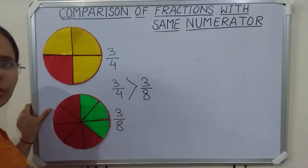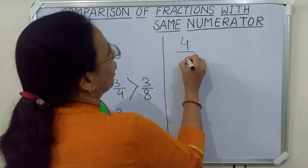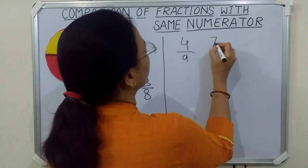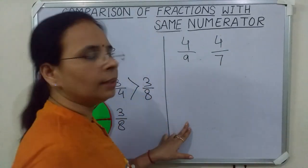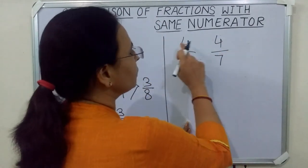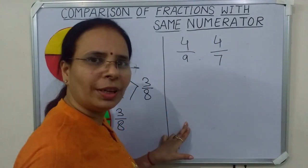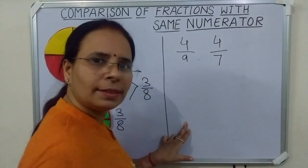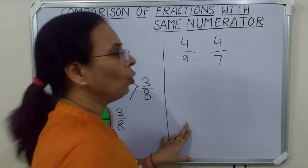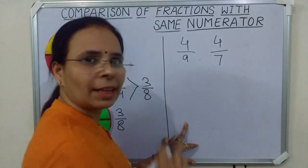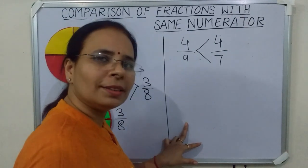Now we will see some more examples. Four upon nine and four upon seven. Children, in these fractions the numerators are same, so we will compare the denominators. Nine is greater than seven, so which one is the greater fraction? Not four upon nine — four upon seven is greater. So we can say four upon nine is less than four upon seven.